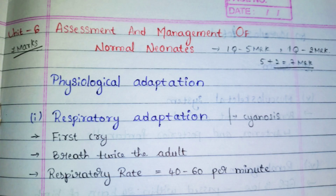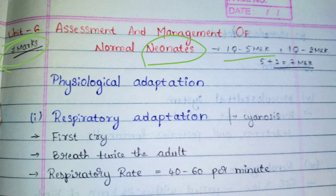Welcome back to the channel. Today we are going to see Unit 6, that is assessment and management of normal neonate. A neonate baby is a baby that is around one month old — for example, if the baby is born today, for the next 28 days or around one month the baby is known as a neonate. From this chapter you will get seven marks: one question for five marks and one question for two marks.